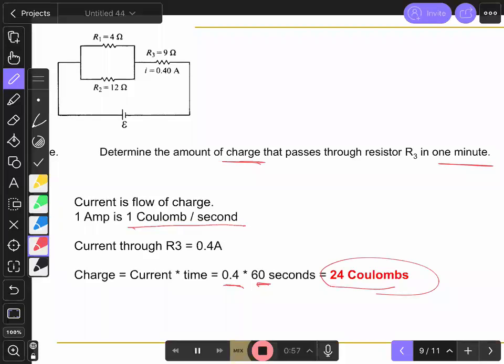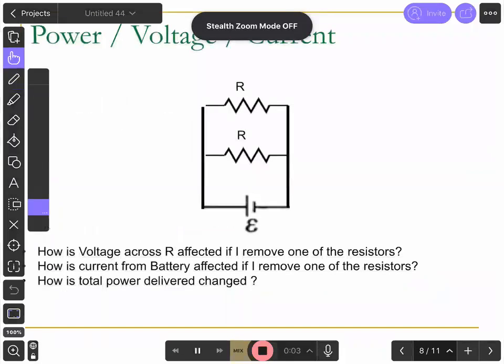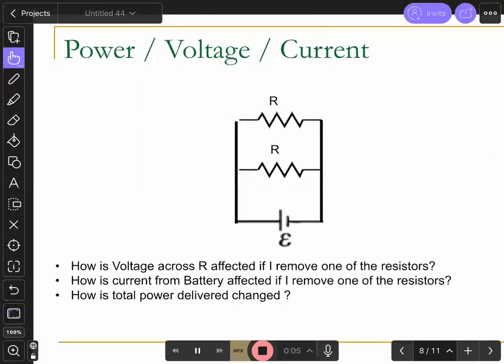All right, one last thing. A number of you guys missed the attendance quiz last time, and so I've created a quiz this afternoon at 2:15. And this slide here will help you a lot with that. But I think it's useful for all of you guys. And if you guys don't mind, reply in the chat. How is voltage across R affected if I remove one of the resistors? Is it less, more, or the same?